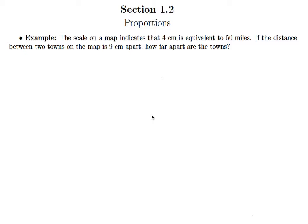So it says the scale on a map indicates that 4 centimeters is equivalent to 50 miles. If the distance between two towns on the map is 9 centimeters apart, how far apart are the towns? We're trying to figure out how far apart the towns are in actuality, so we're looking for miles as our x.